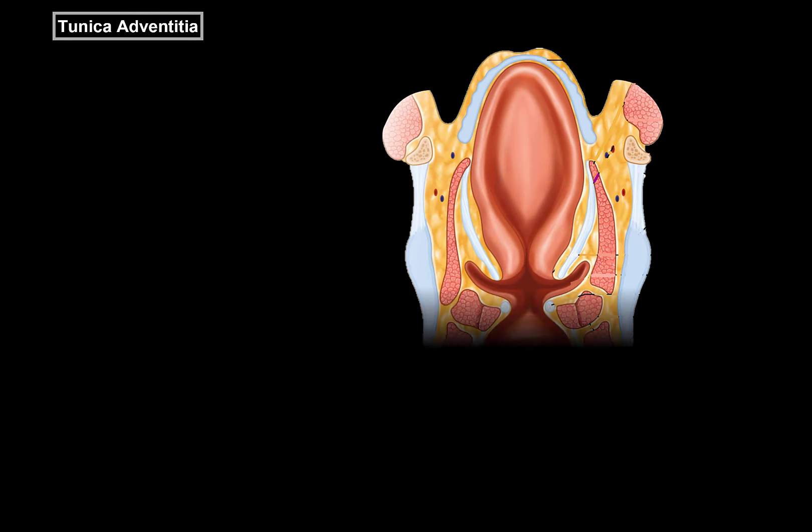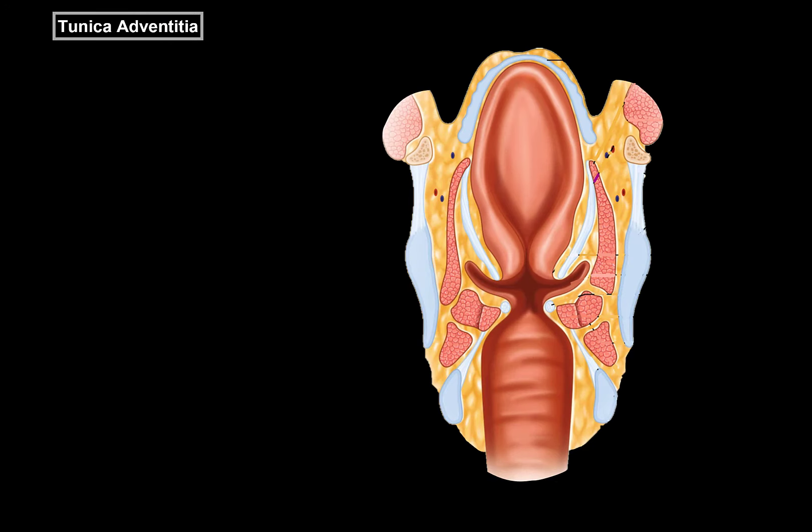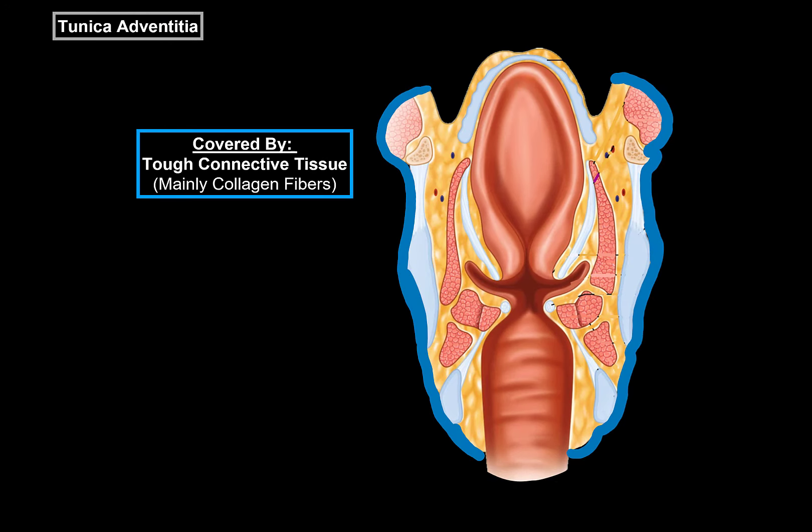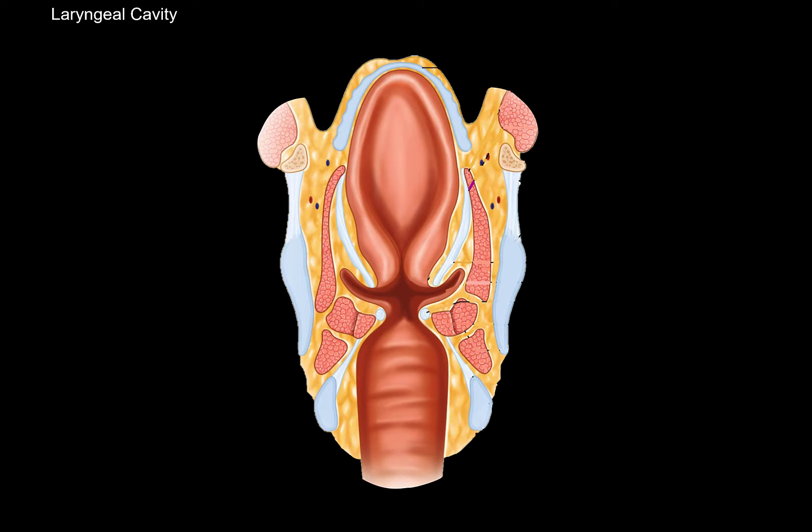Lastly, we have the tunica adventitia. Here's the larynx — tunica adventitia is a covering around the larynx, which is a tough connective tissue consisting mainly of dense collagen fibers. So that was the layers of the laryngeal wall.